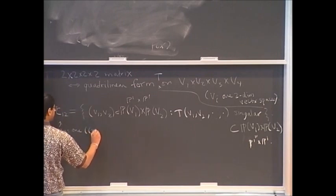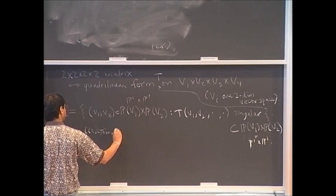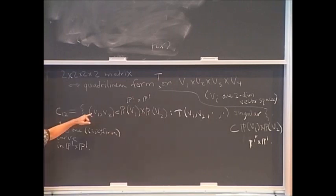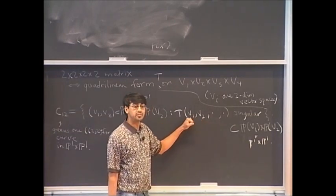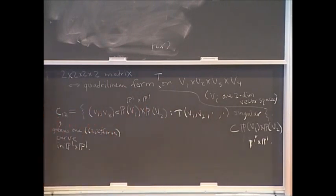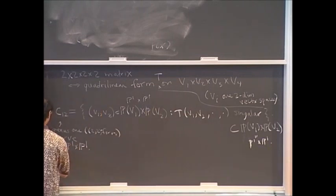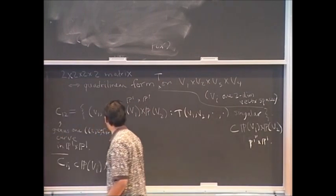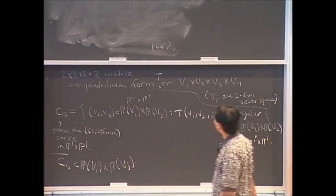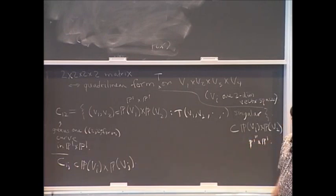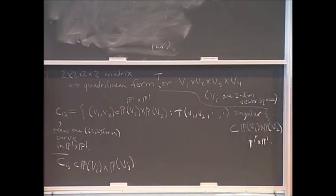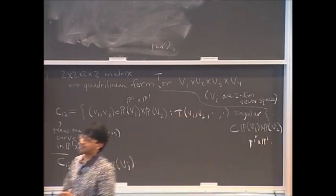So that's the way a hypercube gives you a genus one curve. But this genus one curve came from choosing the first two coordinates. We could have chosen any two coordinates, giving different genus one curves in PV_i cross PV_j. In general you get a C_ij in PV_i cross PV_j. So you end up with four-choose-two equals six genus one curves in the various PV_i cross PV_j's. That's a way of taking a hypercube and producing six genus one curves in P1 cross P1.